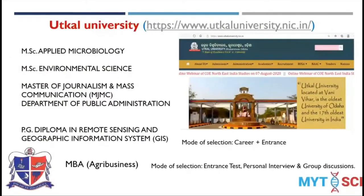Utkal University offers courses for fisheries graduates: master's degrees in applied microbiology, environmental science, and journalism and mass communication, plus a PG diploma in remote sensing and GIS. Selection is based on merit plus entrance. They also have an MBA program in agribusiness, for which you need to attend the common management admission test.